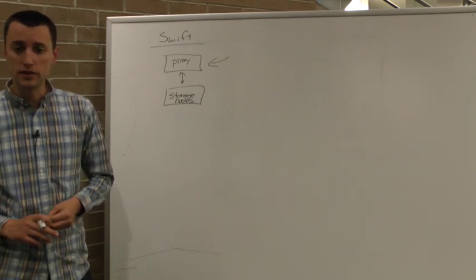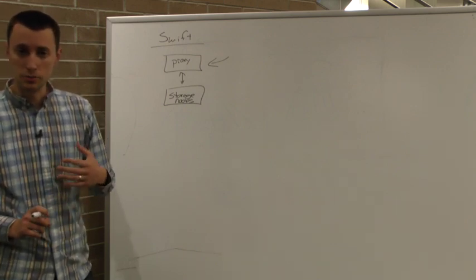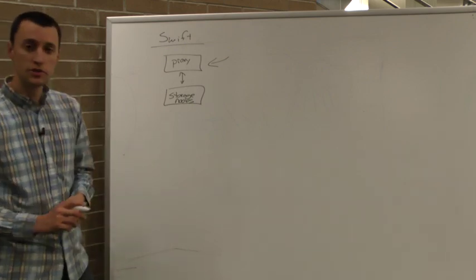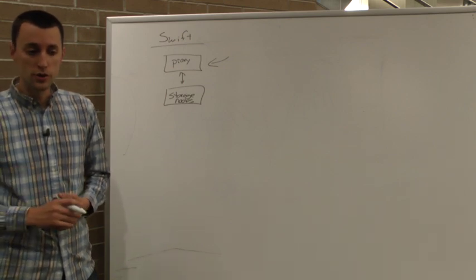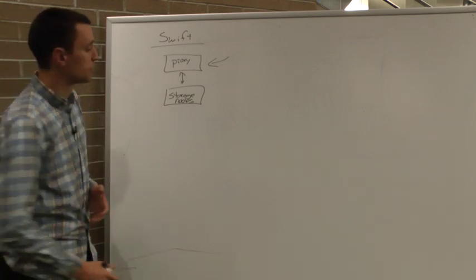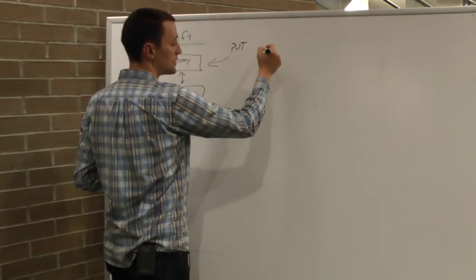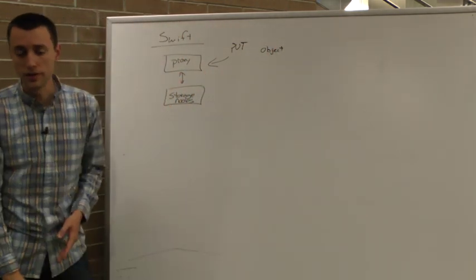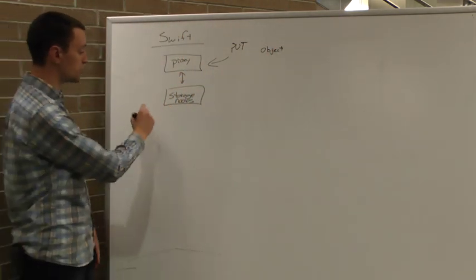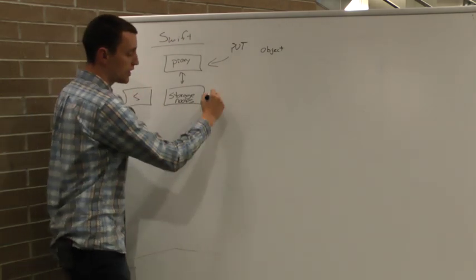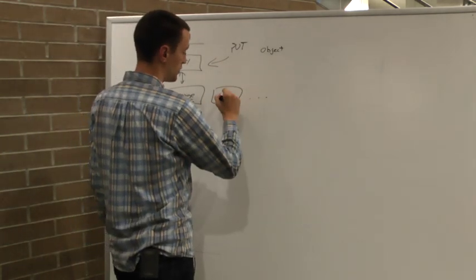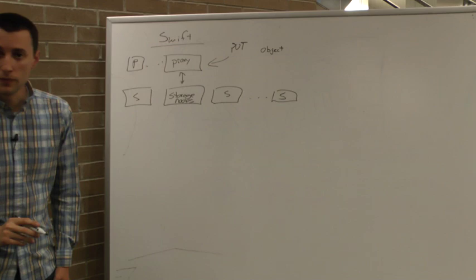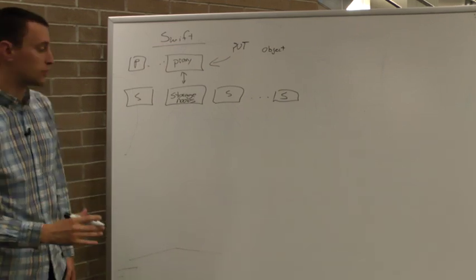Just a little note about the Swift API. It's a REST based API so it's all completely based on standard HTTP verbs and response codes. So in this case, if a user is going to send data to be written into Swift, they may do a put request for a particular object. This object will go to the proxy server. The proxy server will choose which ones of the storage nodes that it needs to talk to. In reality, you've got a whole lot of storage nodes and probably multiple proxy servers in a deployment. I'll get to how that works in just a little bit.